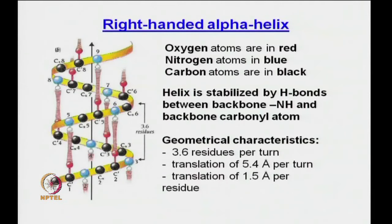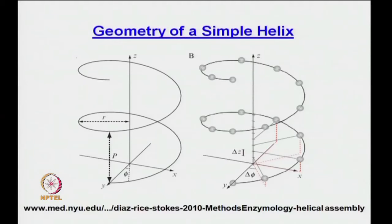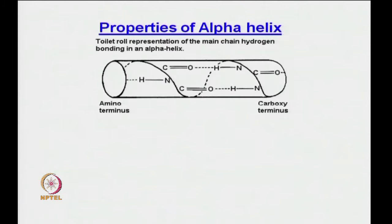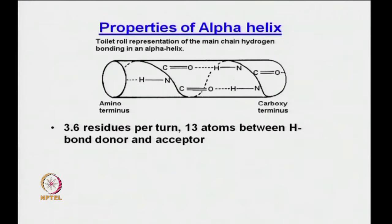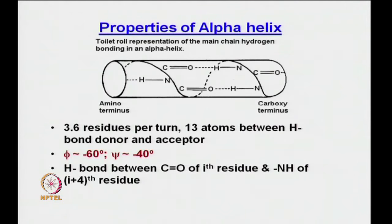We talked about coordinates and derived symmetry transformations for the geometry of a symbol helix. Based on this we looked at symmetry issues and properties: it has almost a cylindrical appearance with 3.6 residues per turn. These are the phi and psi values that belong to the Ramachandran plot. There is a hydrogen bond between the i and i+4th residue, and it is mostly always right-handed.